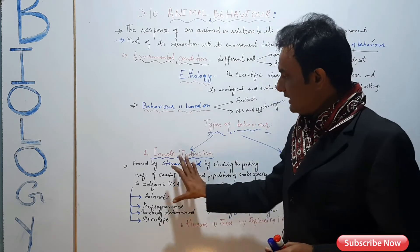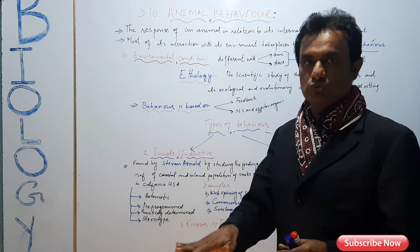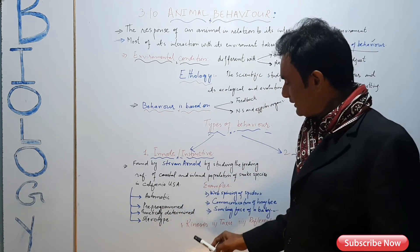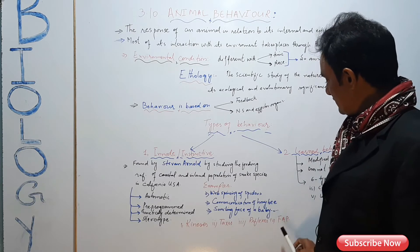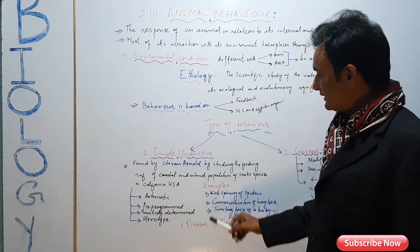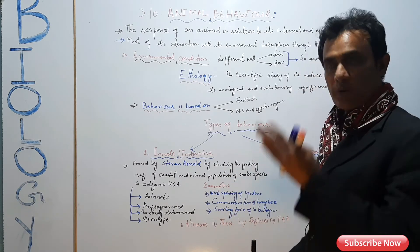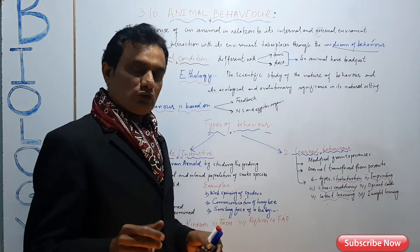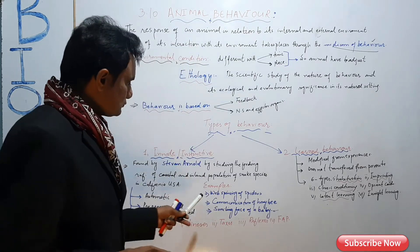Innate behaviors are stereotyped — they are always performed in the same way. These are already in the body, genetically determined. These behaviors are not learned; they are fixed ways of responding that do not require learning.